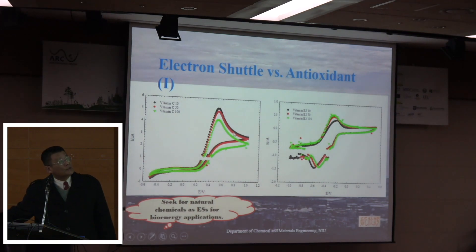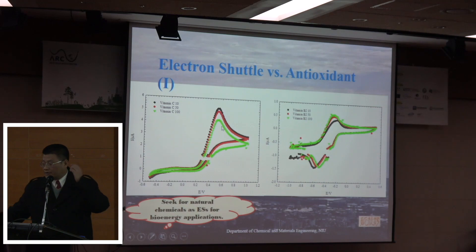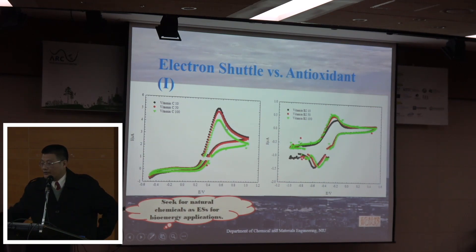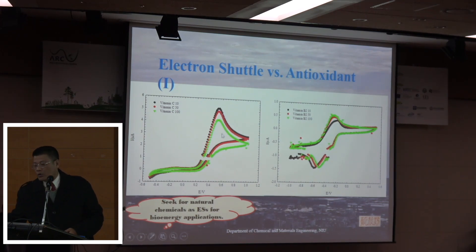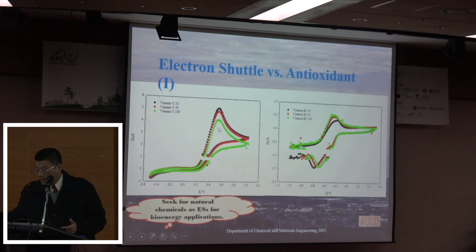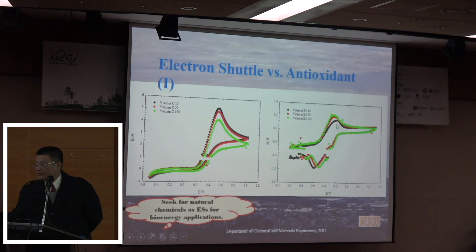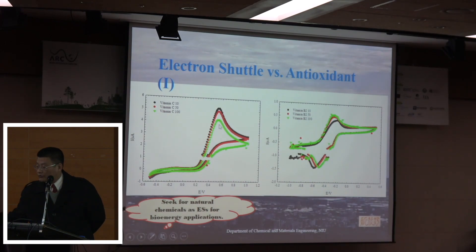Here are some examples. For vitamin C, we conducted 100 cycles and chose cycles 10, 50, and 100. You will see only one oxidative potential peak — it is a typical antioxidant. But for riboflavin, that's vitamin B2, you will see both reductive and oxidative potential peaks, confirming it as an electron shuttle.